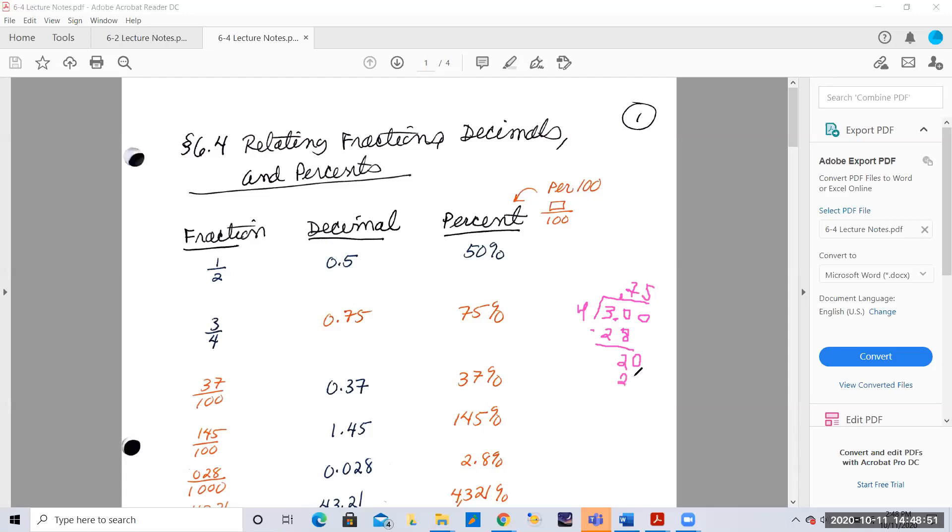Four goes into 20 five times, and that gives you 20. So when you get a remainder of zero, you know that's your exact answer.